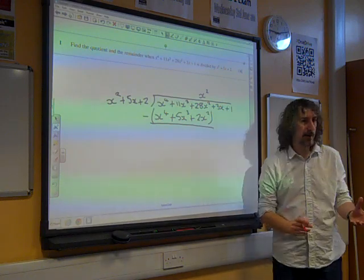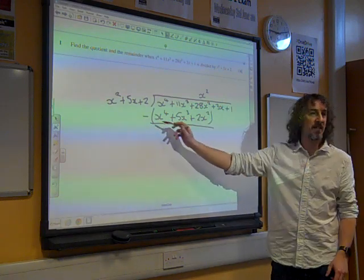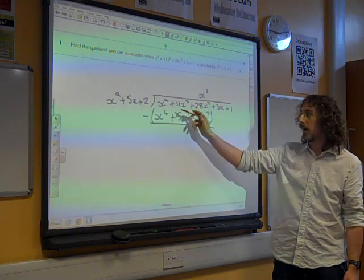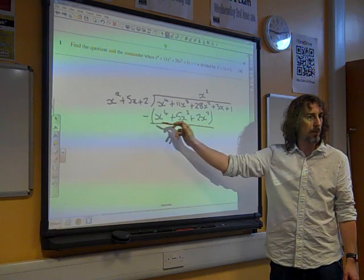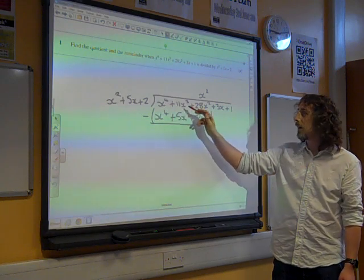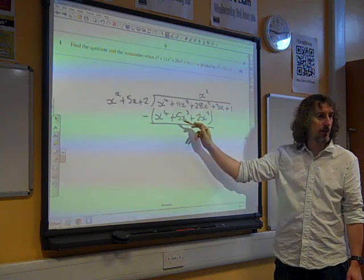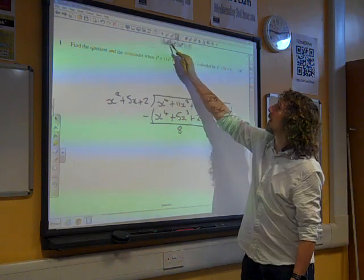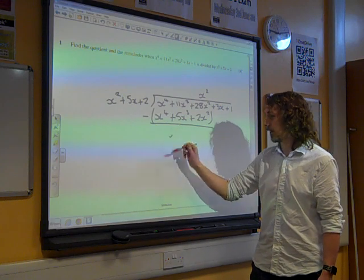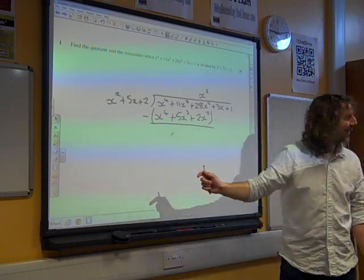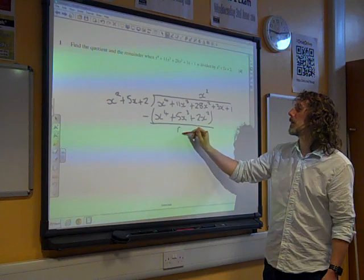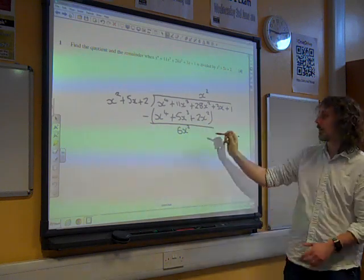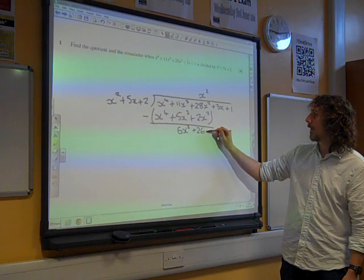And I particularly like putting brackets around this and a negative sign in front just to remind me that I'm subtracting all of the terms inside there. So x to the 4 take x to the 4 gives us 0. 11x cubed take away 5x cubed gives us 8, does it? No, it doesn't, that's nonsense. 6x cubed. At 28x squared take away 2x squared gives us 26x squared.